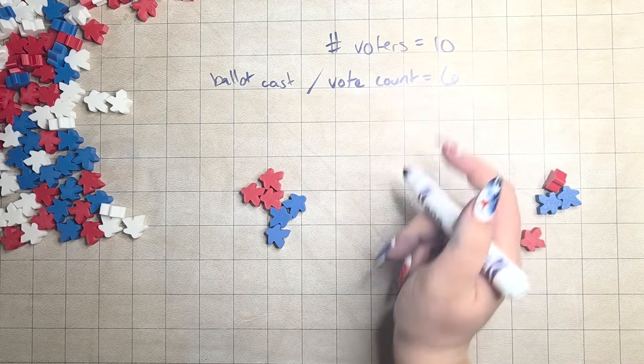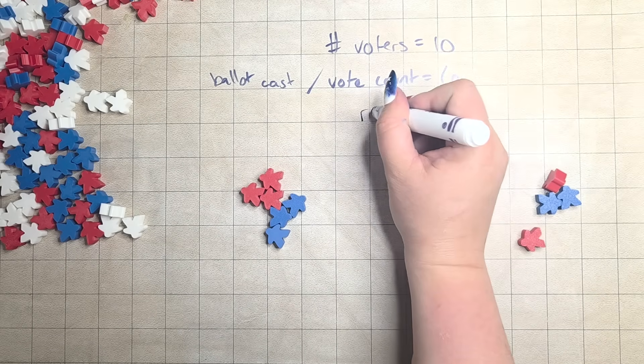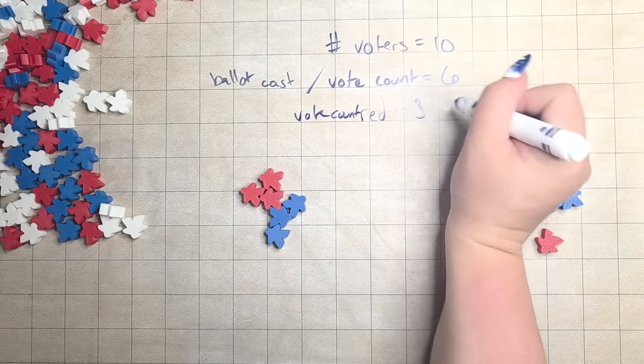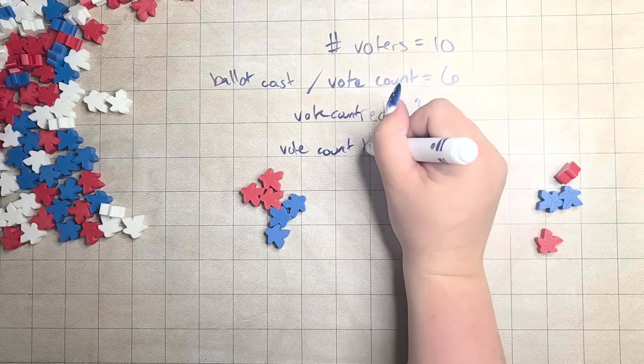Let's assume, just to make it simple, that everybody has voted along party lines here. So, you have the red vote count is 3, and the blue vote count is also 3.